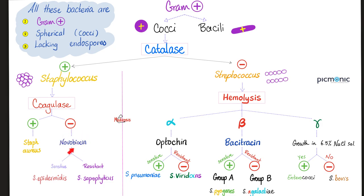Novobiocin can kill Staph epidermidis. This helps us distinguish between Staph epidermidis, which is sensitive to novobiocin, versus Staph saprophyticus, which is resistant to novobiocin.